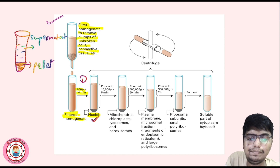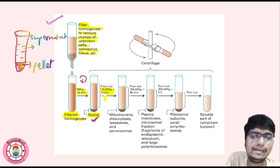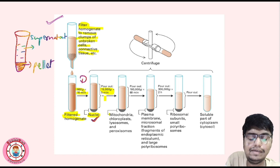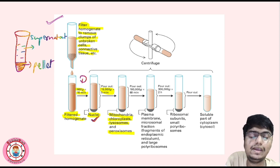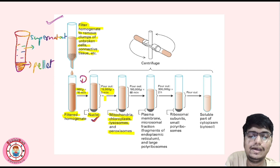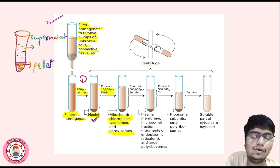The next step: after 50,000 gravity for 5 minutes, we are getting mitochondria, chloroplasts, lysosomes, and peroxisomes in the pellet. We need to remember this.